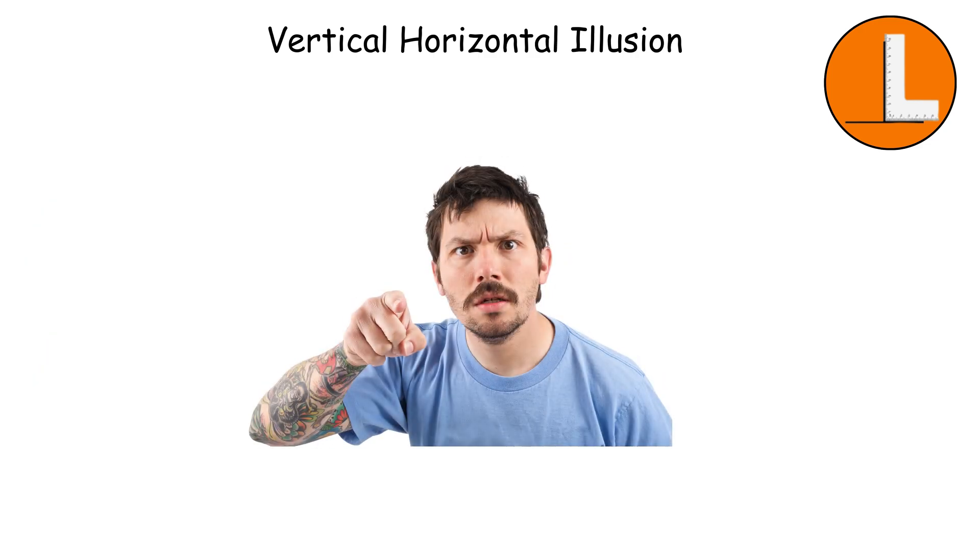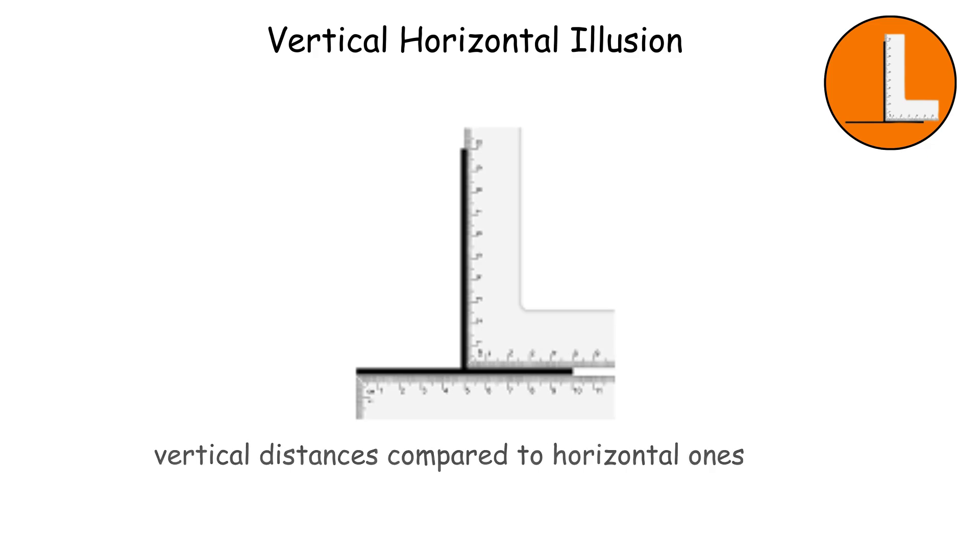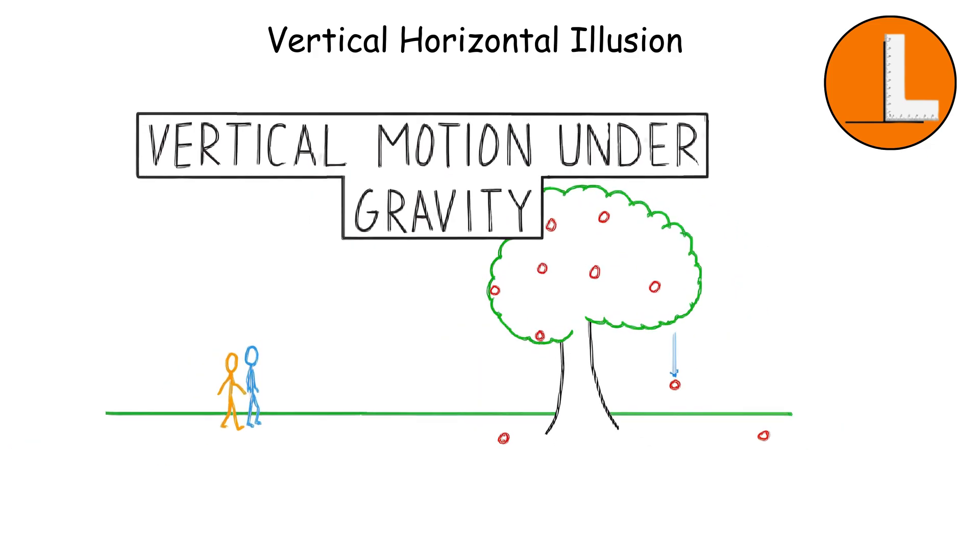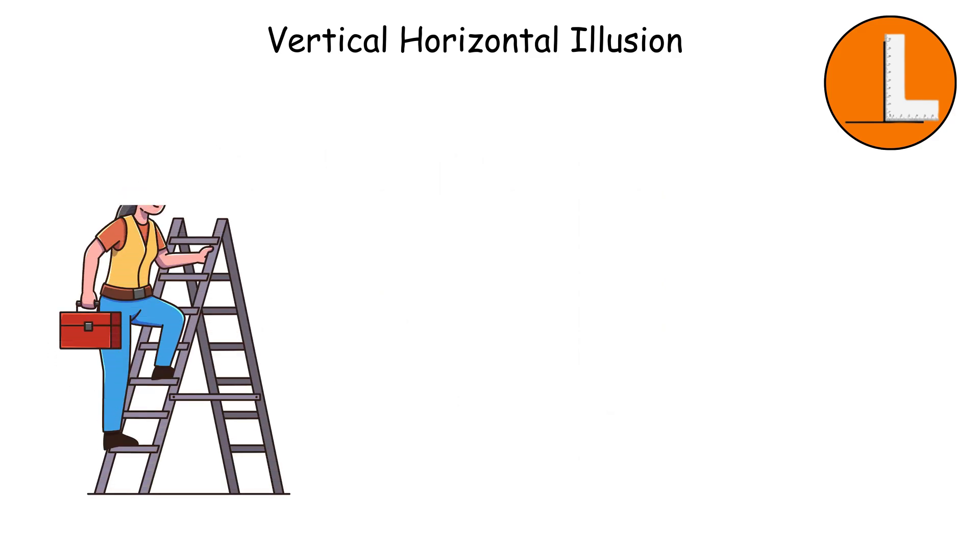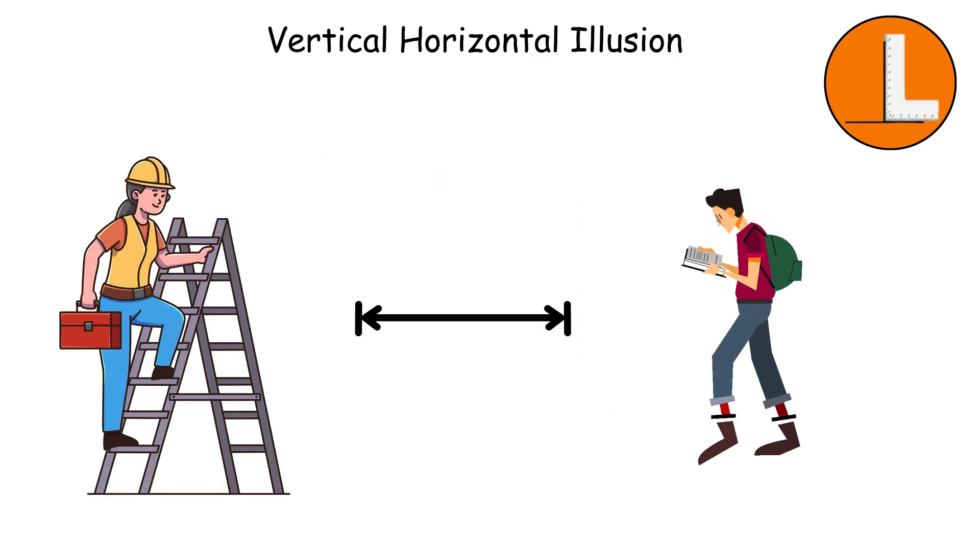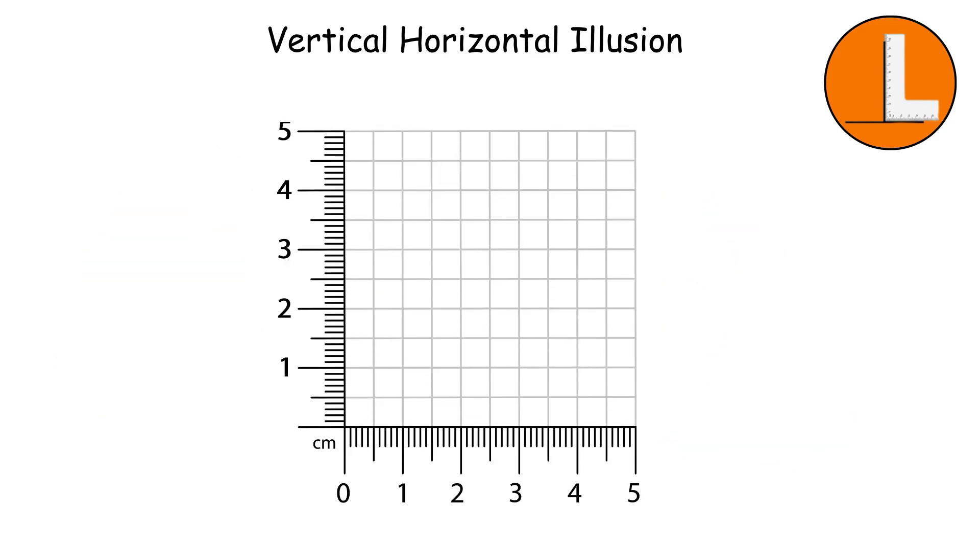Here's the thing. Your brain tends to overestimate vertical distances compared to horizontal ones, possibly because gravity makes vertical movement feel more significant, or because we scan horizontal spaces more frequently with our eyes. It's like your brain thinks climbing a ladder is a bigger deal than walking the same distance across a room, so it inflates the vertical measurement.